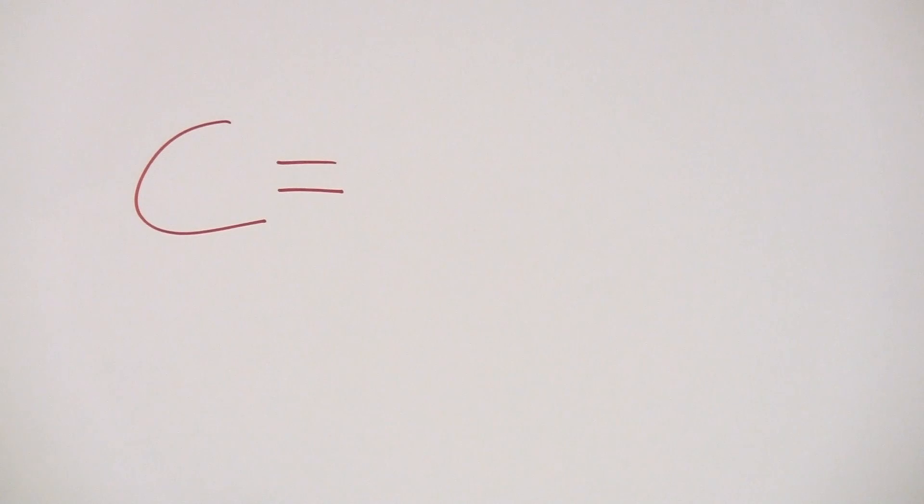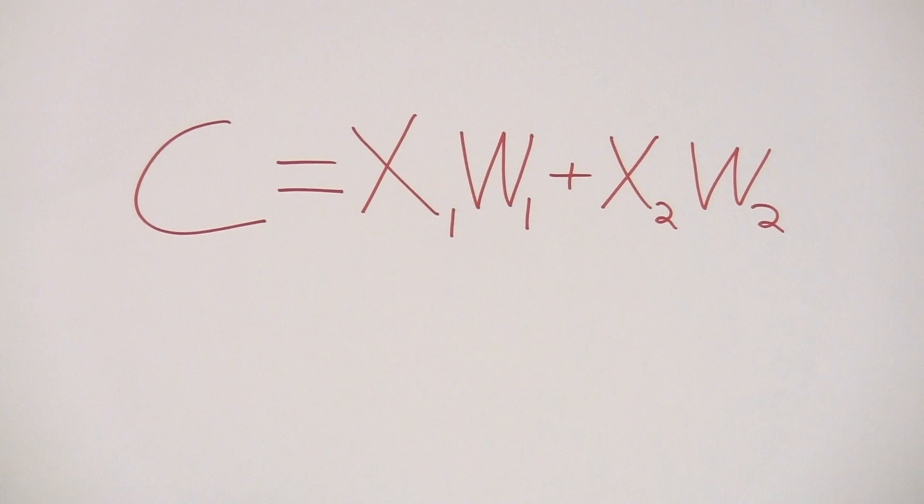The money they spend on the first input will be x1 times w1, and if we add that to the amount of money they spend on the second input, x2 times w2, we get our overall cost function, c.